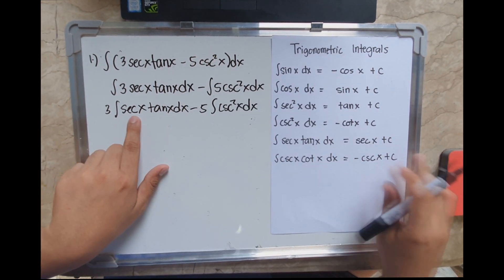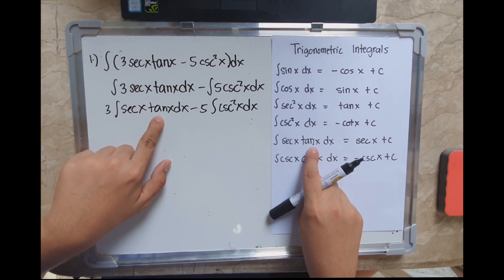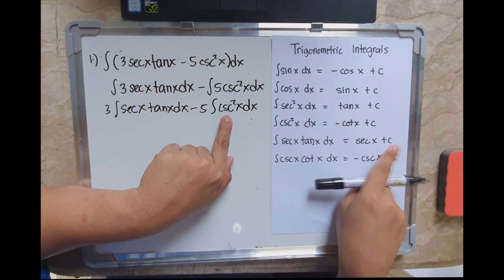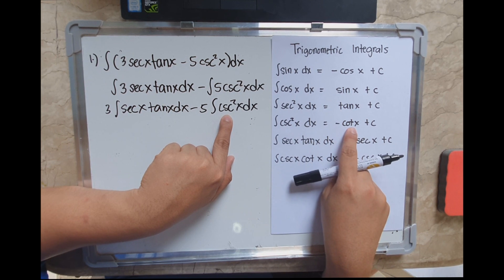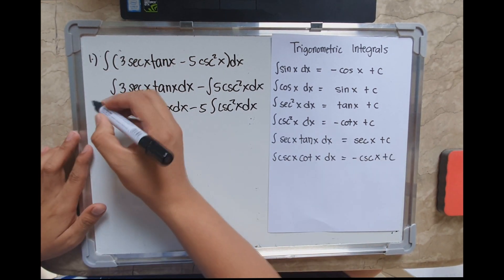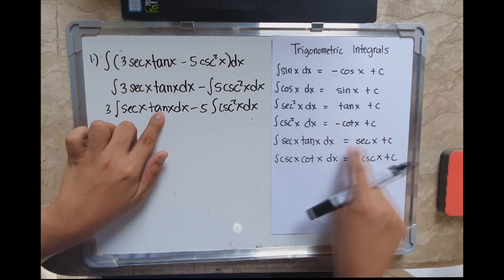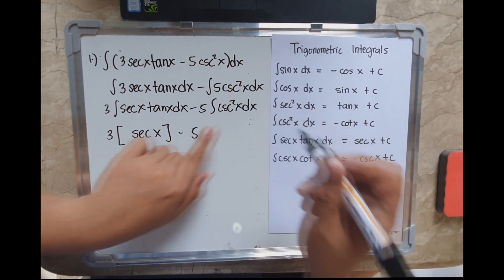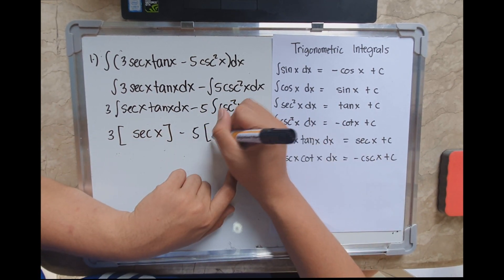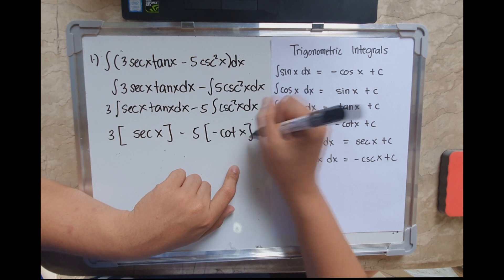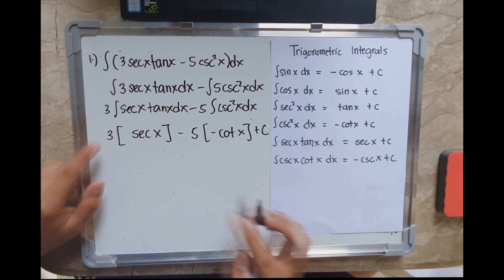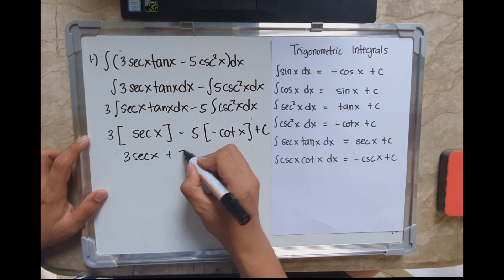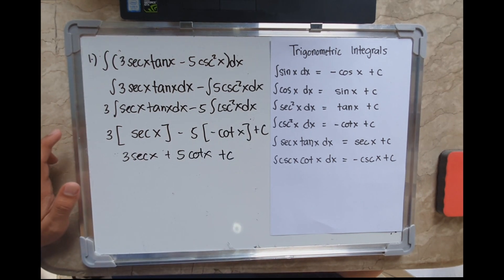We could easily check: sec(x)tan(x) dx is equivalent to sec(x) plus C, and sec²(x) is equivalent to negative cot(x). So we have 3·sec(x)tan(x) gives sec(x), minus 5·(negative cot(x)), giving us the final answer: 3sec(x) plus 5cot(x) plus C.